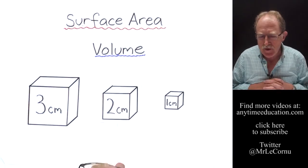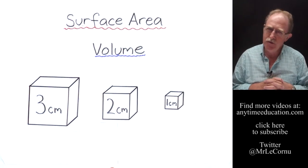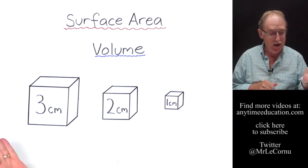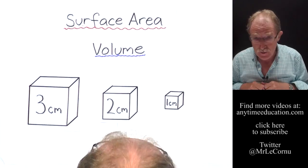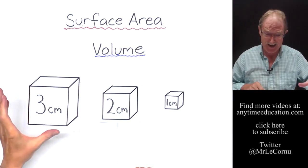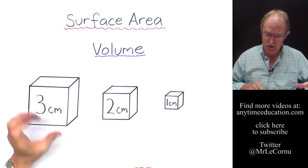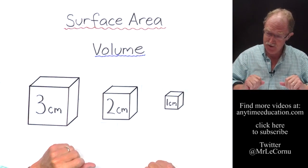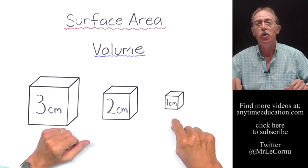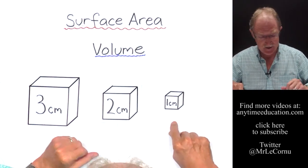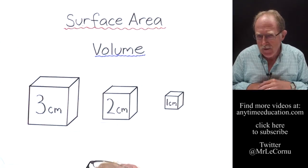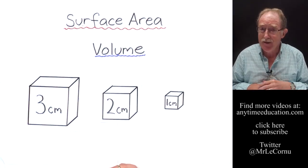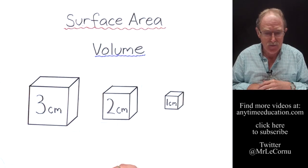We're going to explore surface area and volume by looking at three different sized cubes: a large one at three centimeters, a medium one at two centimeters, and a small one at one centimeter. Let's look at these cubes one at a time, beginning with the three centimeter cube.